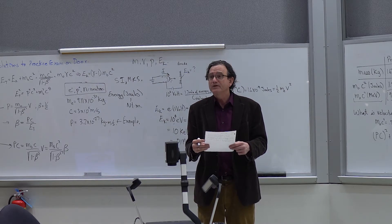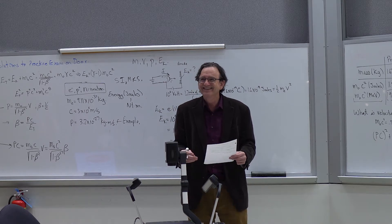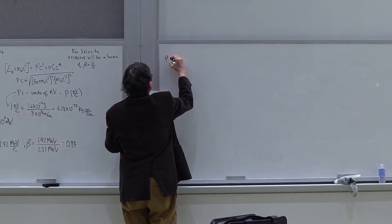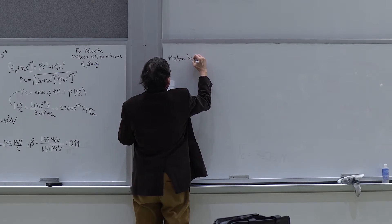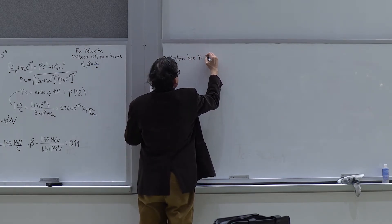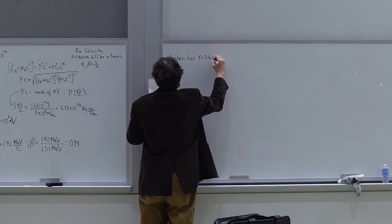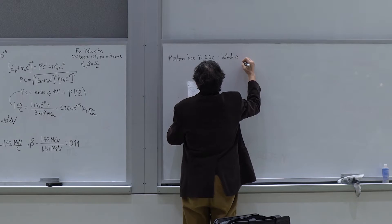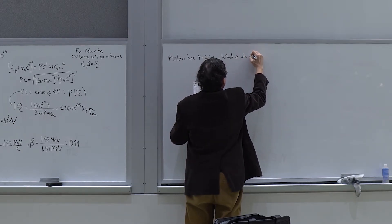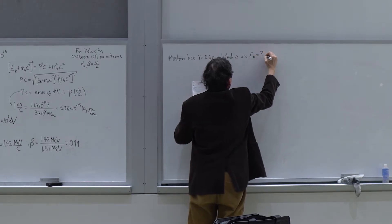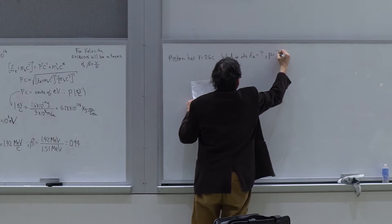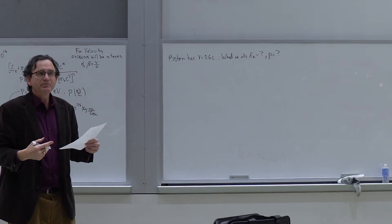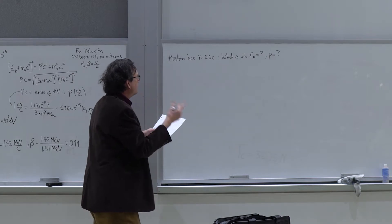Okay, let's try another example. Suppose we have a proton with velocity v = 0.6c. We want to know its kinetic energy and momentum. There's usually more than one way to solve this problem — we have several equations we can use in different orders.